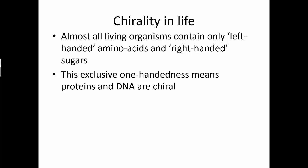Almost all living organisms contain only left-handed amino acids and right-handed sugars. In a mixture of amino acids, you will have both left and right-handed amino acids in equal proportions, but life will always prefer to use the left-handed amino acids and ignore the right-handed ones because we can't break those bonds. Curiously, life will just use the right-handed sugars and ignore the left-handed sugars because we don't have the mechanism to break those down. This exclusive one-handedness means proteins and DNA would be chiral — because DNA has right-handed sugars attached to it, and proteins are made of left-handed amino acids.